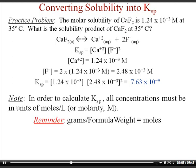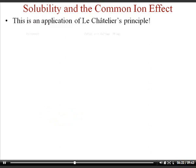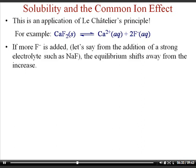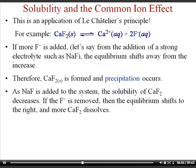In KSP expressions, the brackets indicate molarity, so concentrations must be in moles per liter. The common ion effect on solubility is an application of Le Chatelier's principle. If an ion is already in solution, it shifts the equilibrium to the left. For example, adding more fluoride ions by dissolving a strong electrolyte like sodium fluoride shifts the equilibrium away from ions toward the solid, increasing precipitation of calcium fluoride and decreasing its solubility.